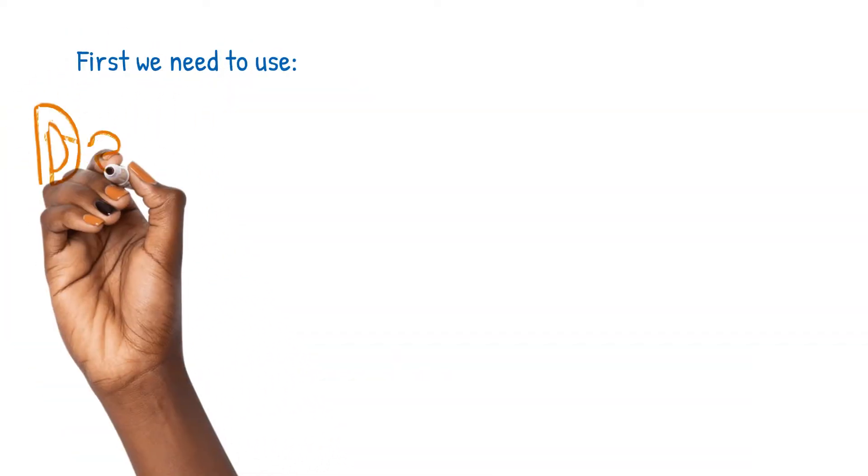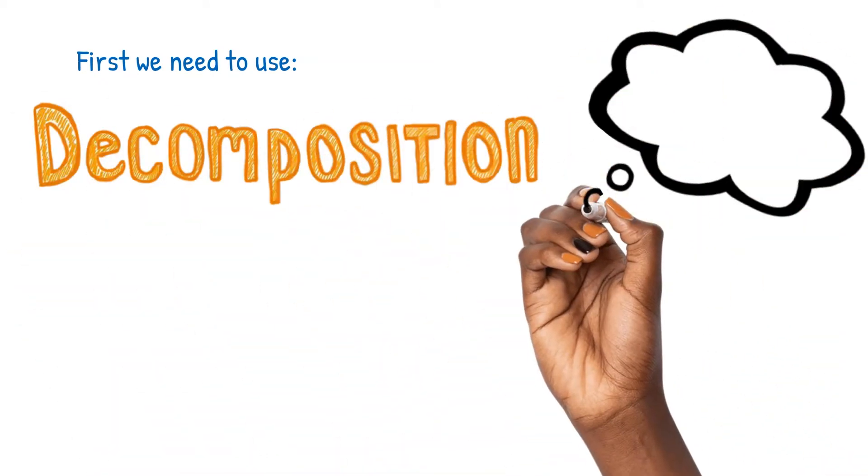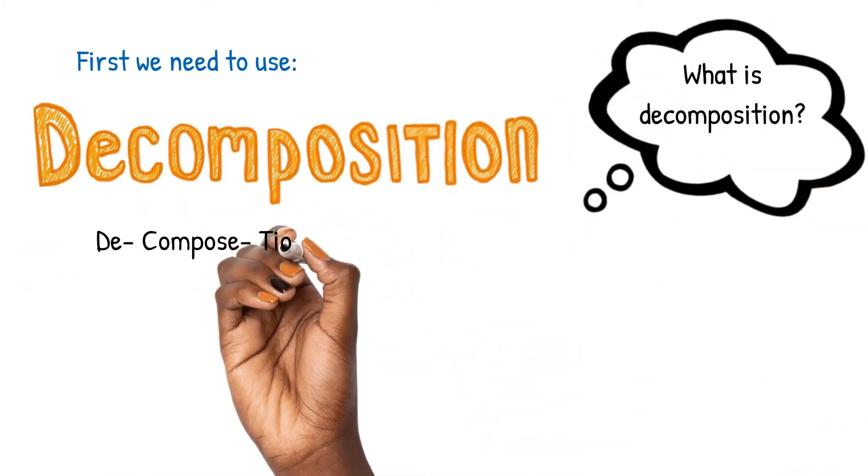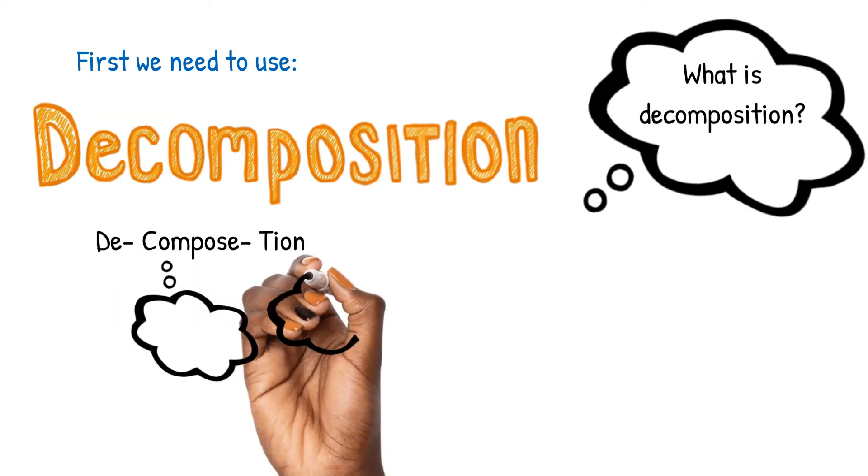First, we need to use decomposition. What is decomposition? If we break down the word decompose and shun, compose is to make or create, shun is a process, and down.